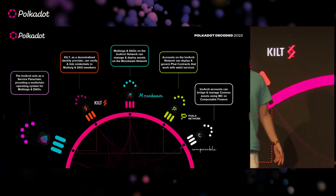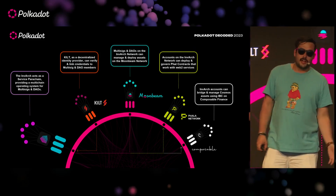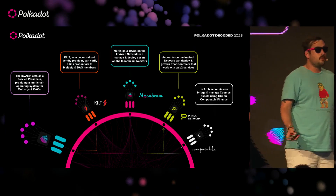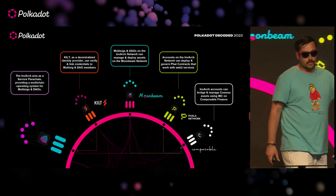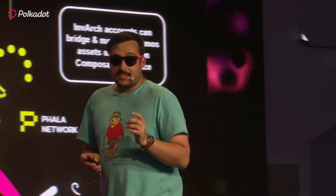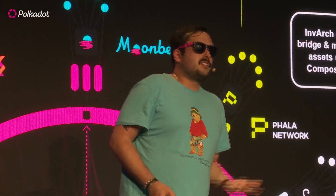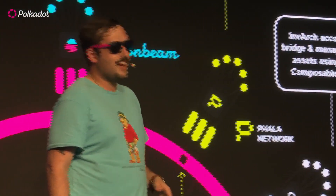With Phala Network, their FAT contracts allow for off-chain computation. You can have a multi-sig that owns a FAT contract which spins up a bot that owns and creates a Discord server — now you have a Discord server essentially owned and managed by a multi-sig, decentralizing ownership over the server itself for a community and a DAO. Because for some reason, that's where most DAOs communicate nowadays — Discord is de facto.